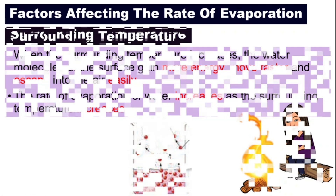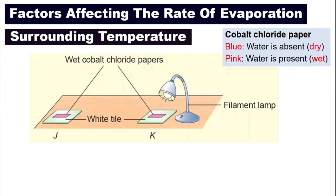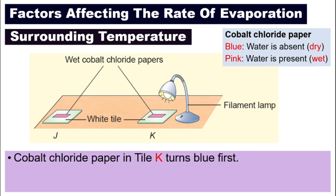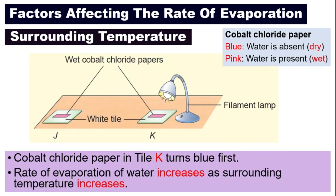To test this out, we can do this experiment. We will have two strips of cobalt chloride paper on two different tiles: J and K. We put tile J away from a filament lamp and put tile K underneath it, then turn on the filament lamp — because the lamp will release heat, so the surrounding temperature for K is higher. You will find that the cobalt chloride paper in tile K will turn blue first, because the rate of evaporation increases as the surrounding temperature also increases.